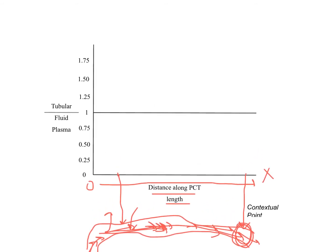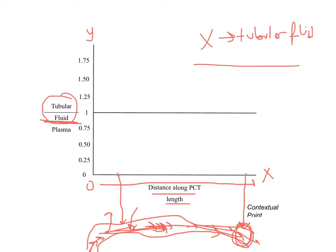Now let's look at the y-axis of this graph. The y-axis depicts tubular fluid concentration relative to plasma. This means we have a substance X — we measure it in the tubular fluid and also in the blood — and we divide them. So this y-axis shows us the tubular fluid concentration of a substance relative to plasma.